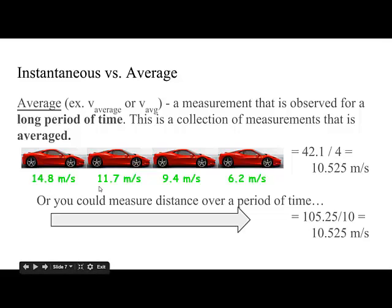And then I'm traveling at 9.4, and then I'm traveling at 6.2. And if I were to add all of these up, I will get 42.1. And then I divide by 4 in order to average them, and I get an average speed of 10.525 meters per second. And that's my average velocity.